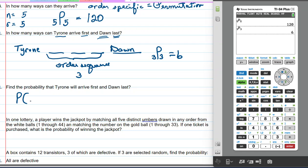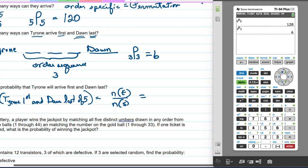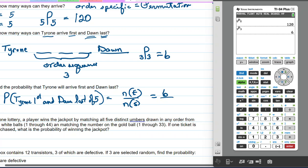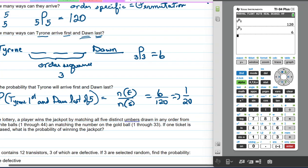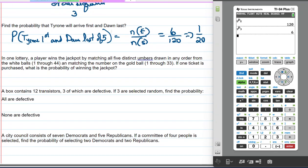Now we want to structure the probability. Probability Tyrone first, Dawn last, of the 5. So we want the cardinality of our event over the cardinality of our sample space. In this case, our desired event, there are 6 ways that the 3 other people besides Tyrone and Dawn arrive at the dinner party, out of the total number of ways they can arrive at the dinner party. So now I'm going to reduce it. And probably unlikely, isn't it?